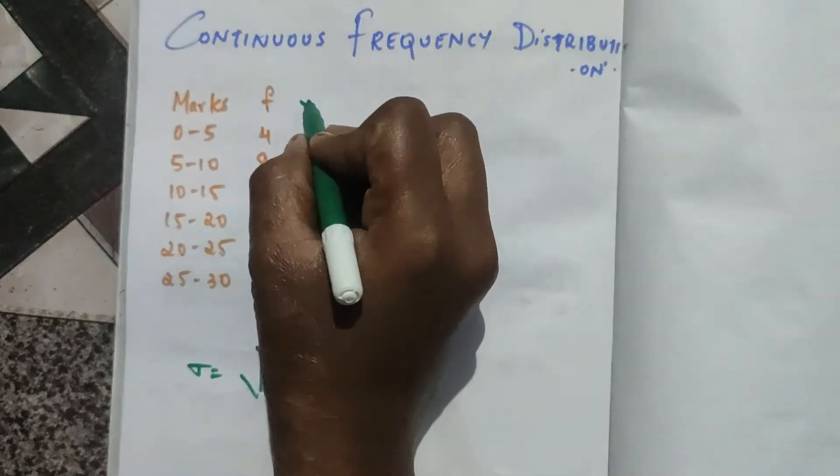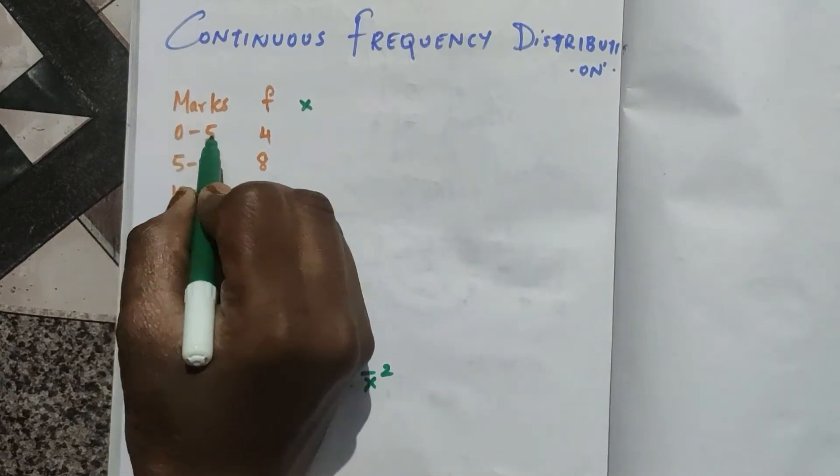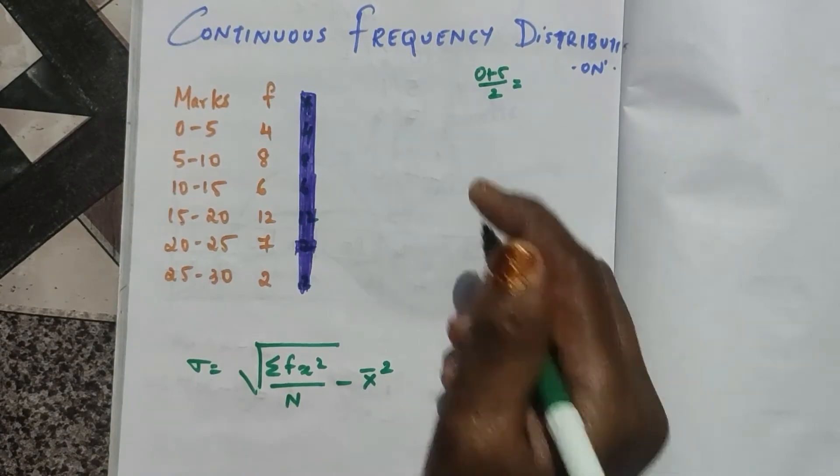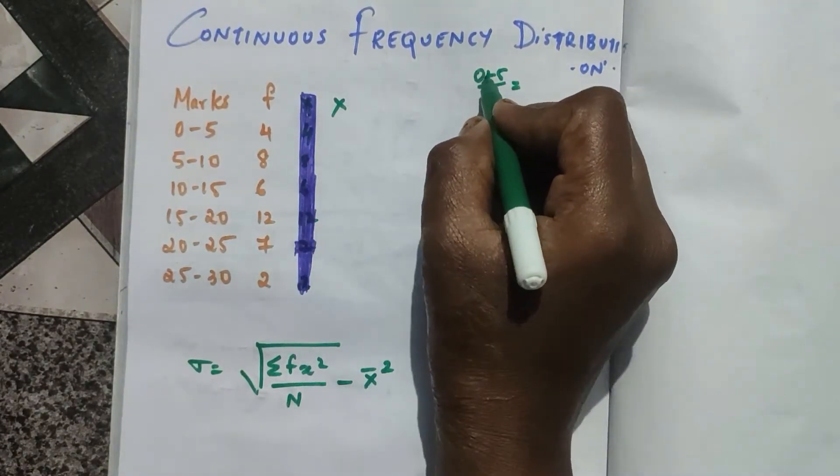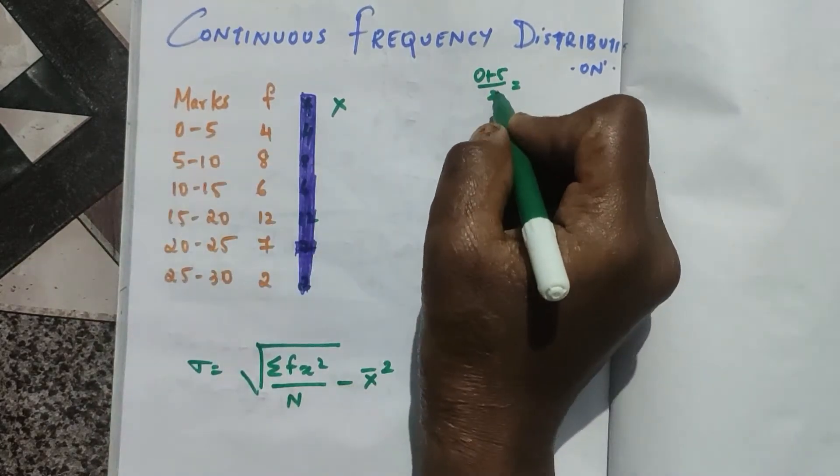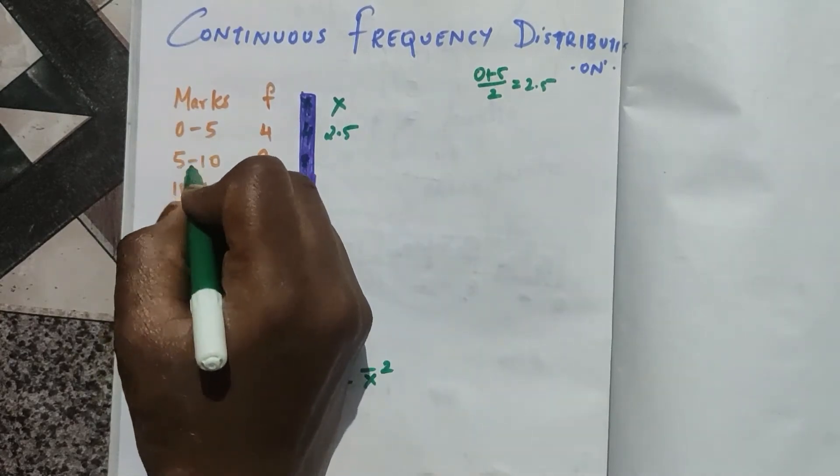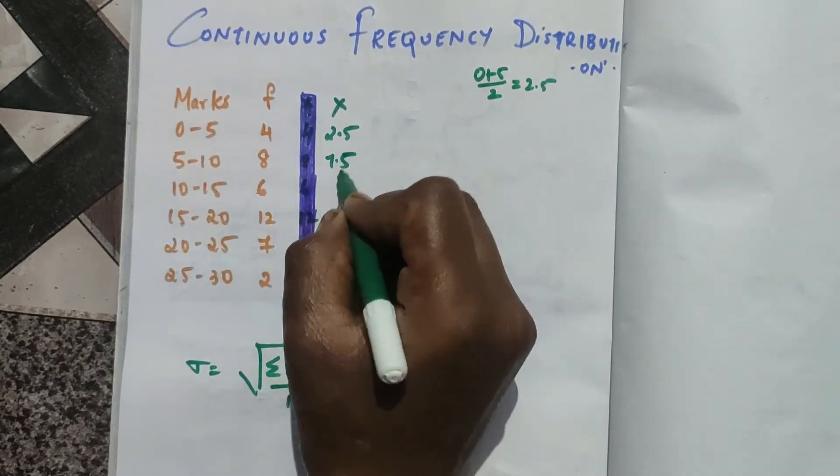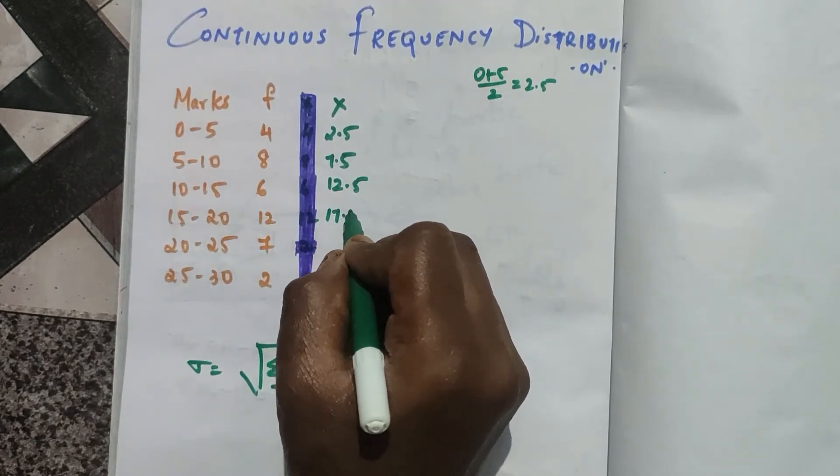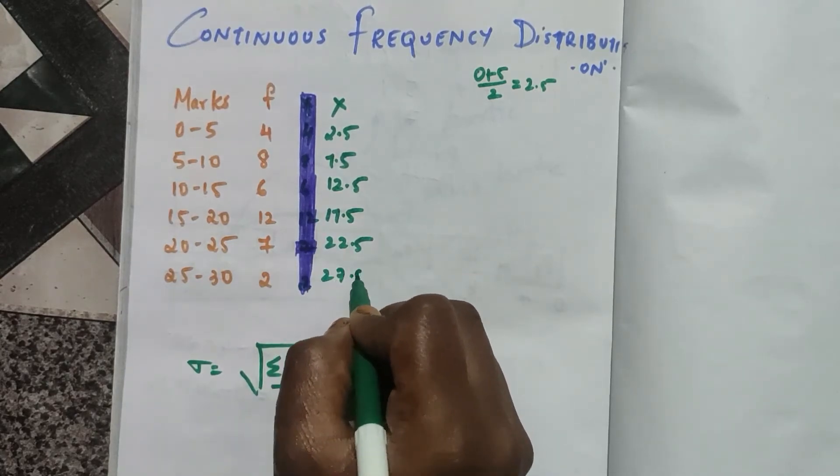First we need to find out x. How we'll get our x value is we need to add these two values and divide by two to get the midpoints. Zero plus five divide by two, that is two point five. Then seven point five, twelve point five, seventeen point five, twenty two point five, and twenty seven point five. So now we got our x values.